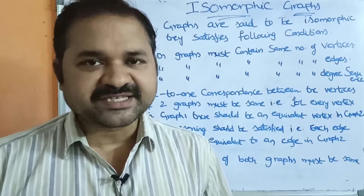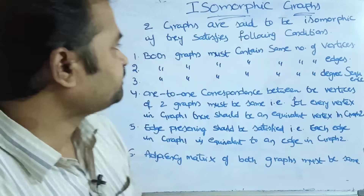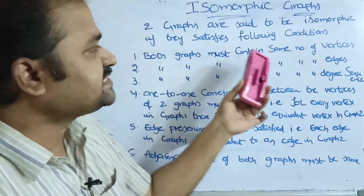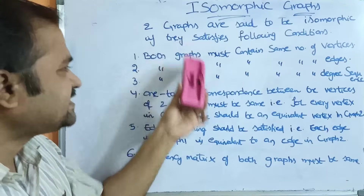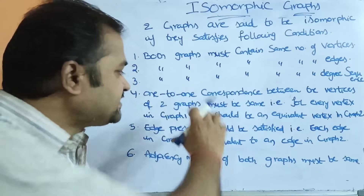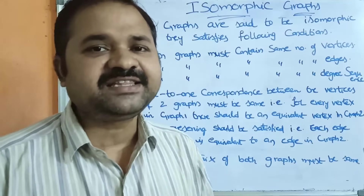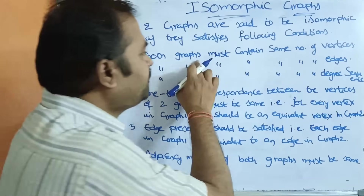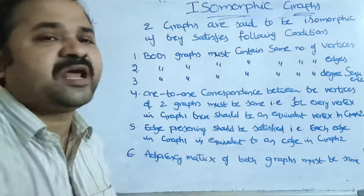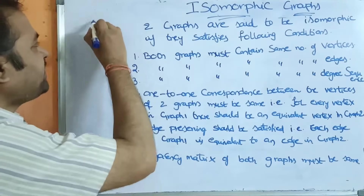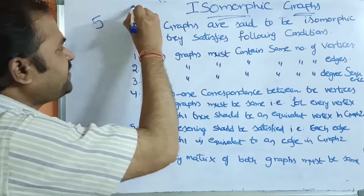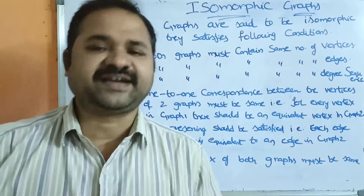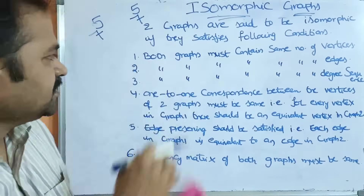In this video we are going to discuss about isomorphic graphs. Two graphs are said to be isomorphic if they satisfy the following six conditions. The first condition is both graphs must contain the same number of vertices. If graph one contains five vertices then graph two should also contain five vertices, and if graph one contains seven vertices then graph two should also contain seven vertices.